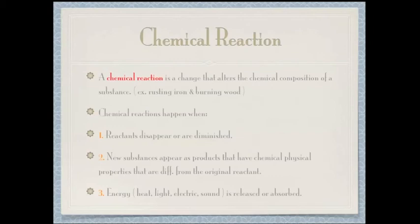A chemical reaction is a change that alters the chemical composition of a substance, for example, rusting iron and burning wood. Chemical reactions happen when: 1) Reactants disappear or are diminished; 2) New substances appear as products with chemical and physical properties different from the original reactants; 3) Energy, heat, light, electricity, or sound is released or absorbed.